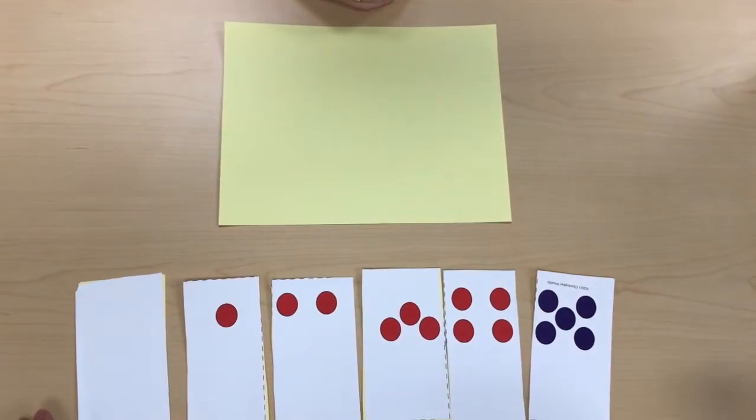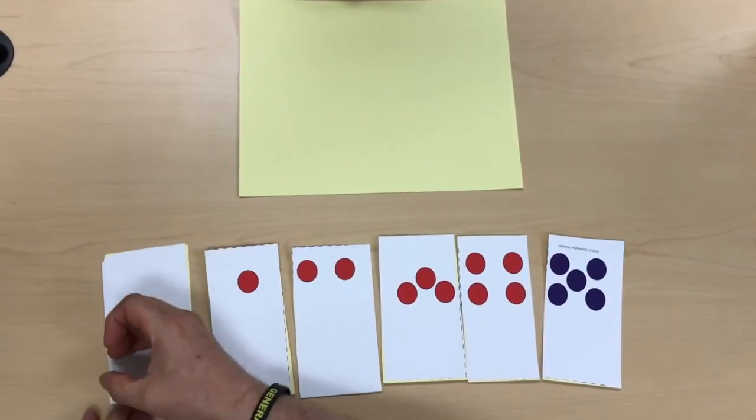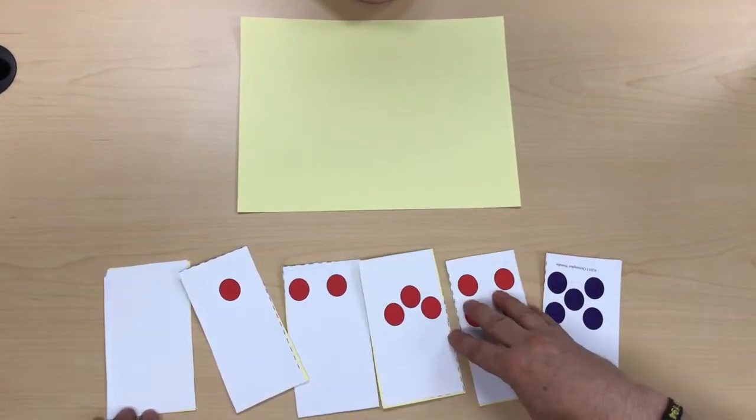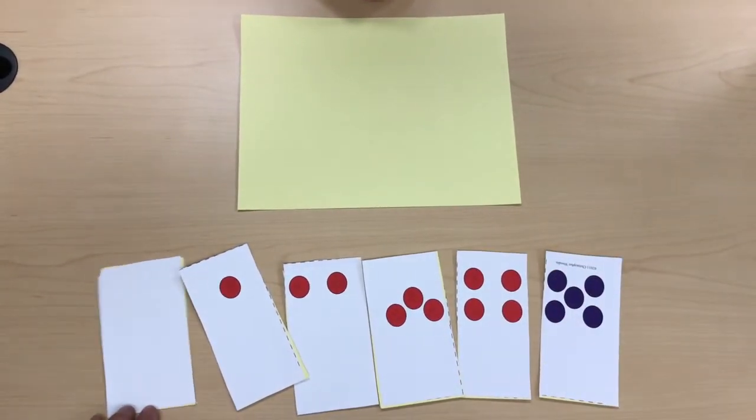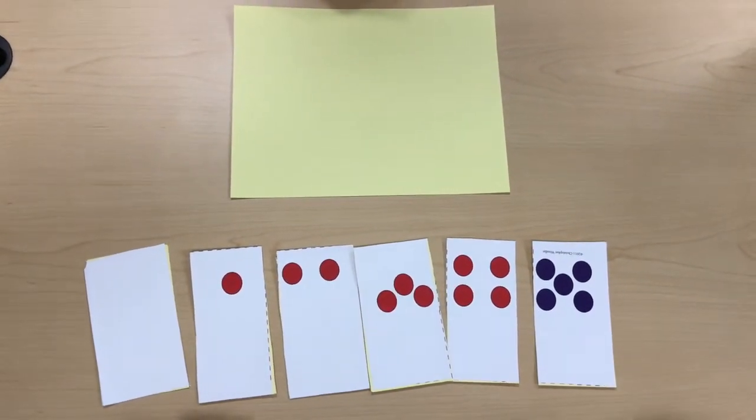We're going to try to link finger patterns with quantities from 0, 1, 2, 3, 4, 5. How they display the finger patterns is not critically important as long as the right number of fingers go out.